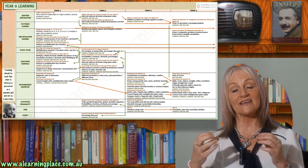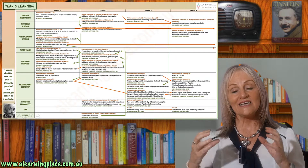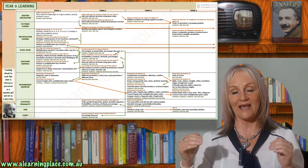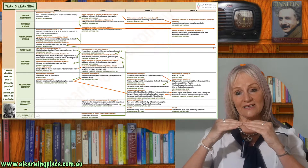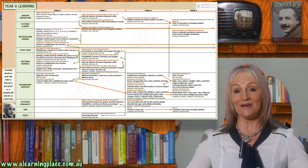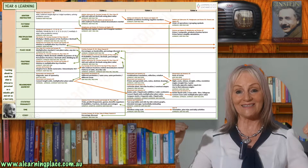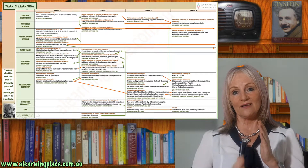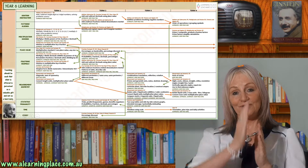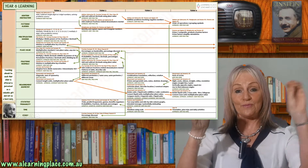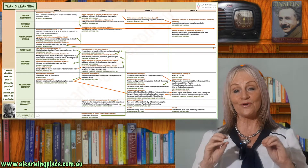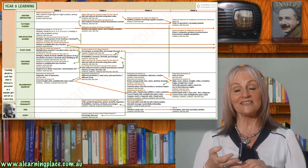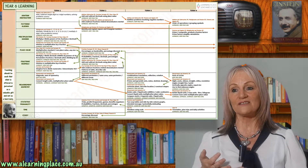They will also be investigating the Cartesian plane, which Descartes invented — which is why it's called the Cartesian plane. We've always been working with a horizontal number line when adding and subtracting. Now we're going to add another dimension: the vertical number line. Once the children add the vertical number line, we can now plot points anywhere in the four quadrants. Children will investigate the coordinates and drawing shapes in the four quadrants.